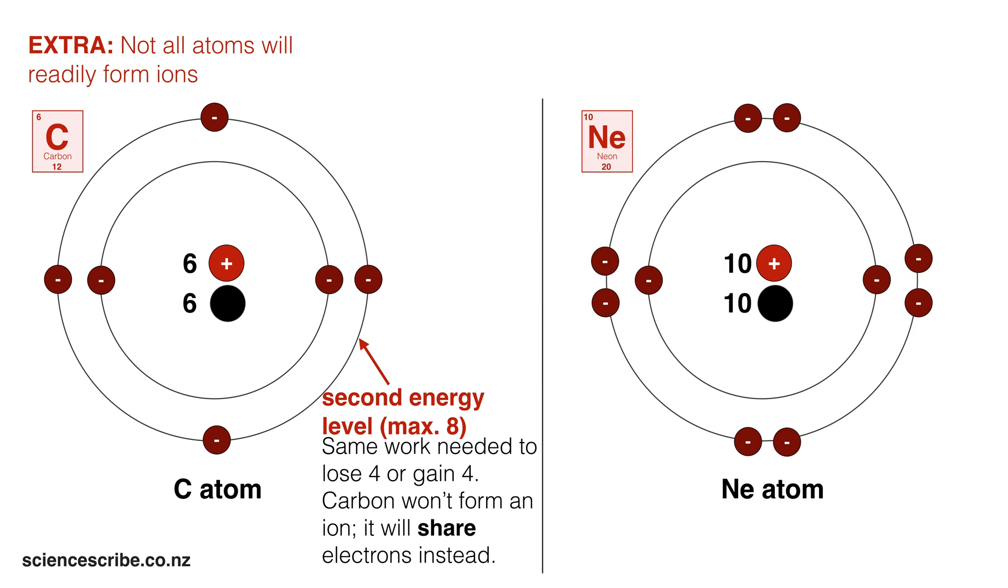In the case of neon, you can see that when you draw the neon atom, its outermost energy level, the second energy level is already full. Neon isn't going to gain another electron in the third level, and it definitely is not going to lose 8 electrons either. Therefore, neon is already stable, so it doesn't form an ion.